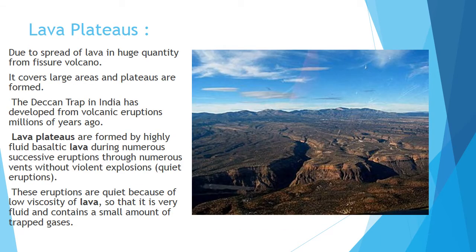Next is lava plateaus. This type of plateau is generally created when the fissure type of volcano takes place, which we have already studied. Due to the spread of lava in huge quantity from a fissure volcano, it covers a large area and plateaus are formed. The lava comes in a large amount in liquid state, so it spreads widely and covers a large area. The Deccan Trap in India developed from volcanic eruption millions of years ago — the Deccan Plateau was created because of fissure volcanoes.